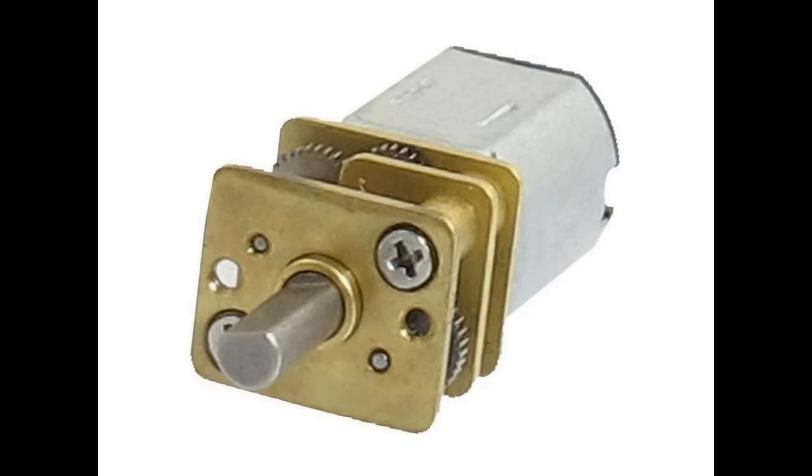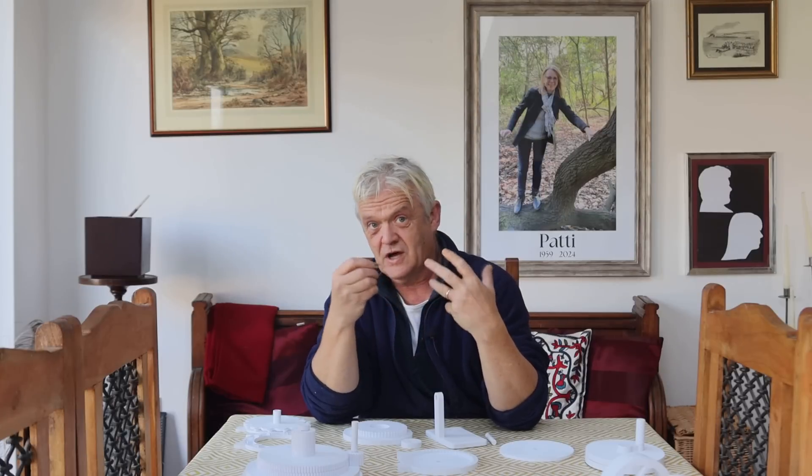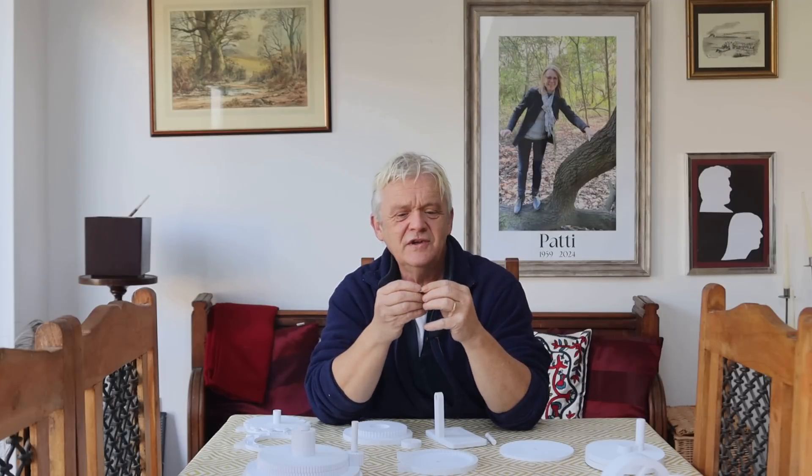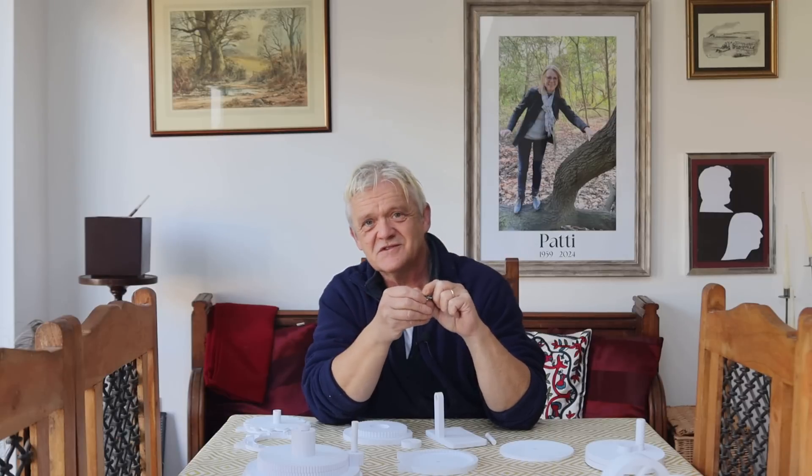To do that, all we actually need is this little motor. This little motor I got from Amazon, and it's rated at 60 RPM for 6 volts. So of course, 60 RPM is ideal for us, because 60 RPM means 60 turns in one minute, and so one turn equals a second.